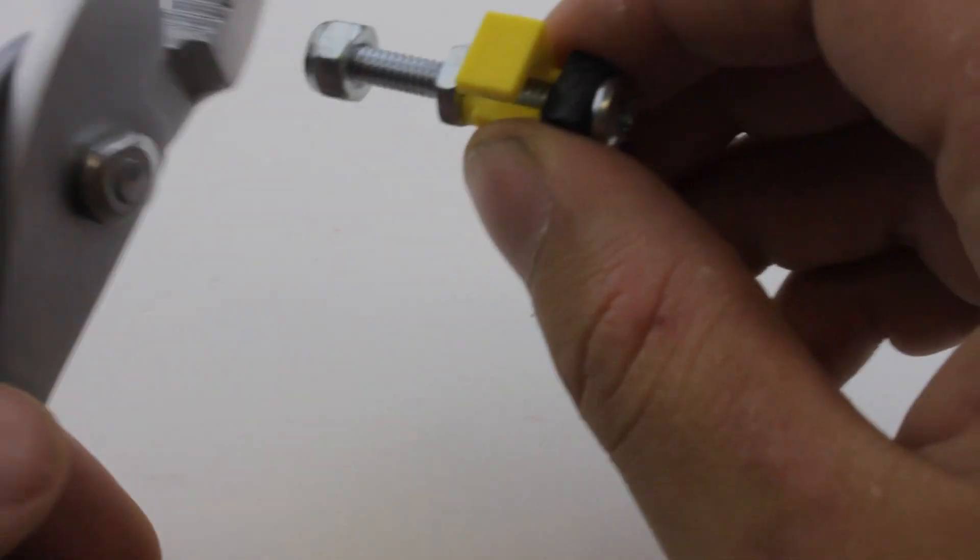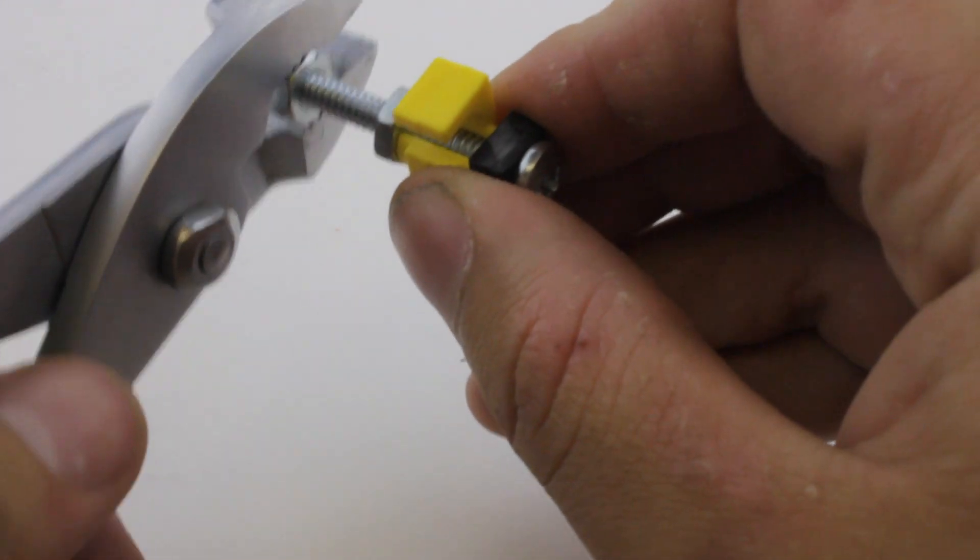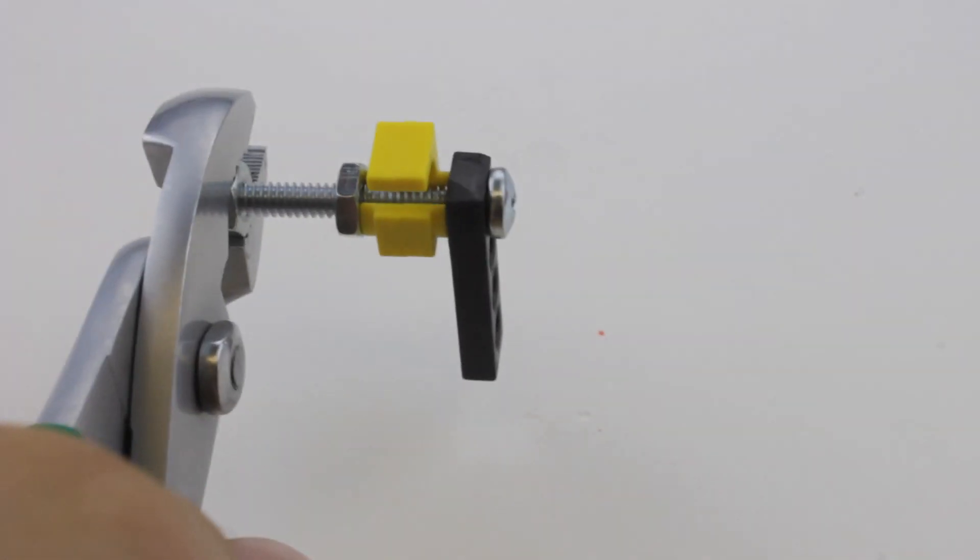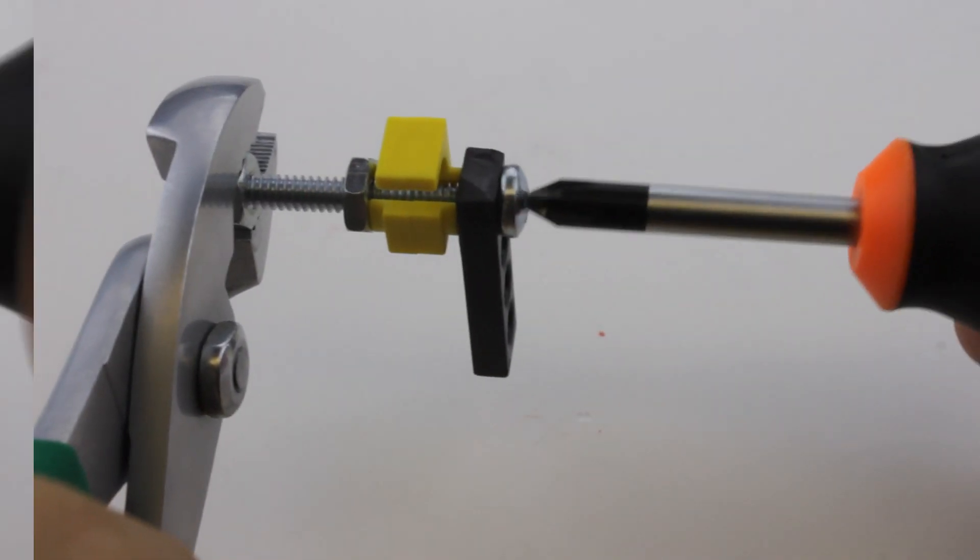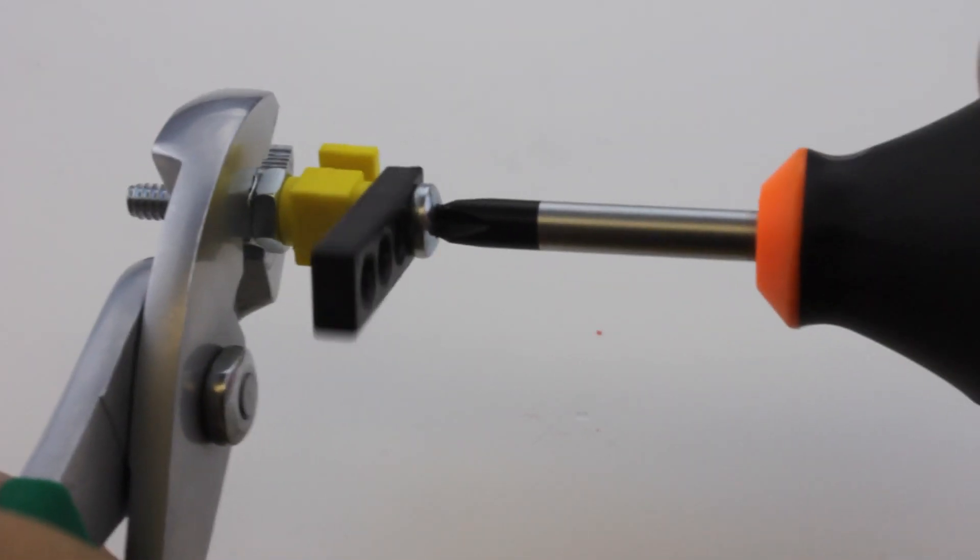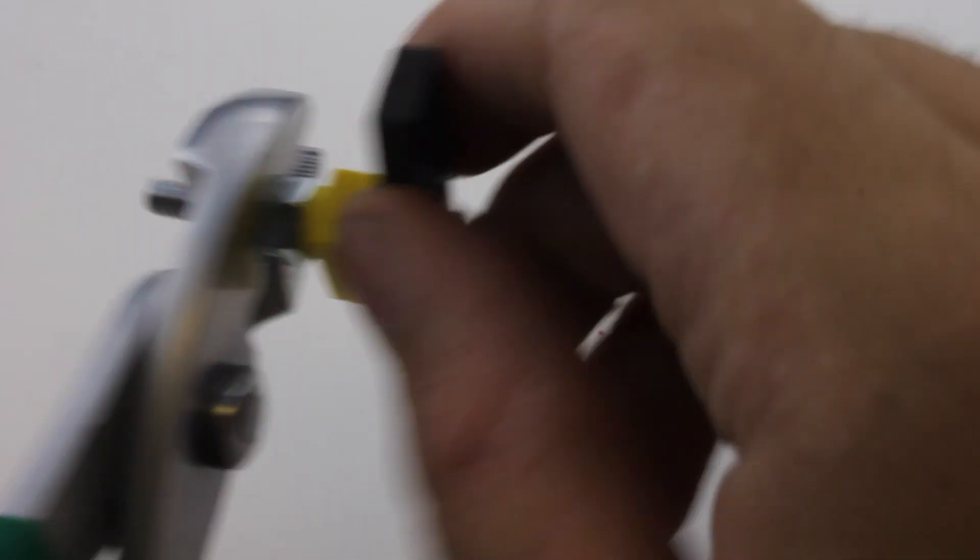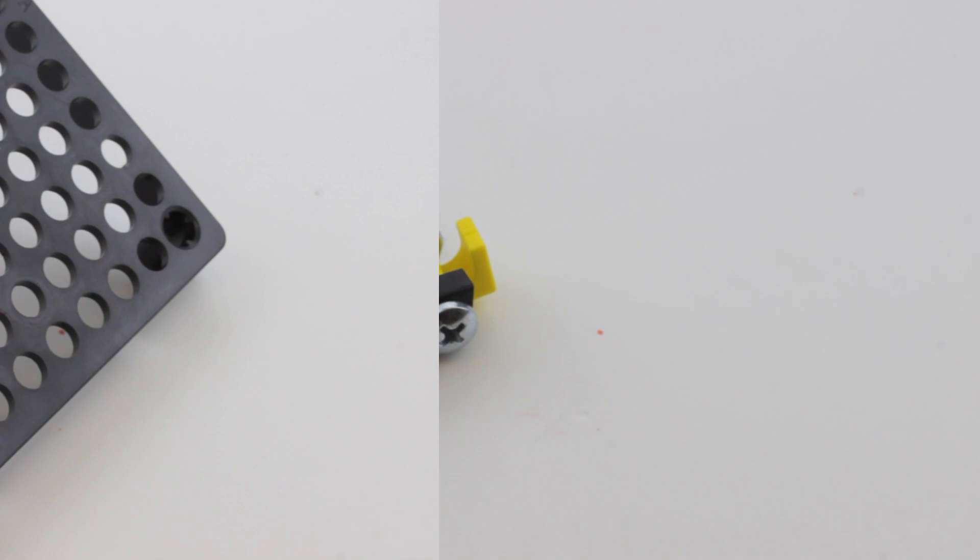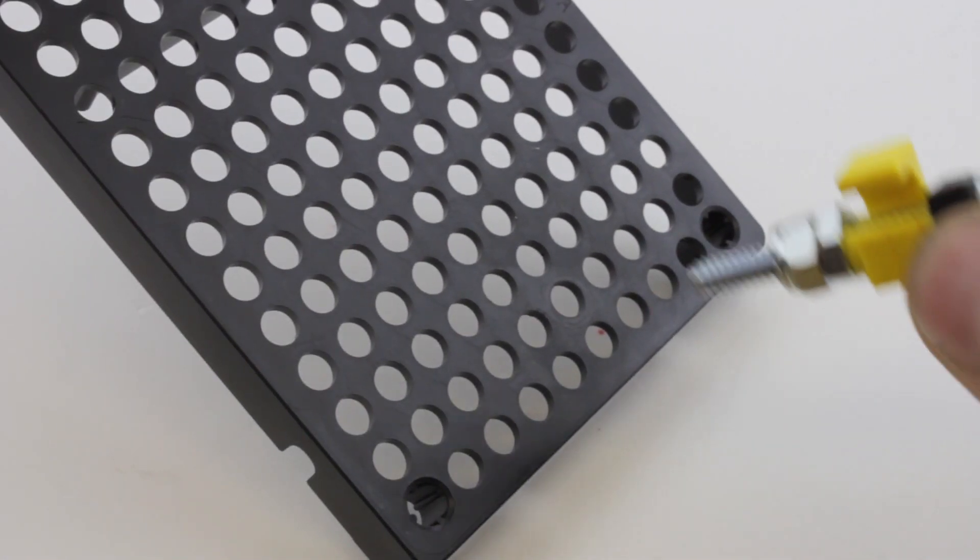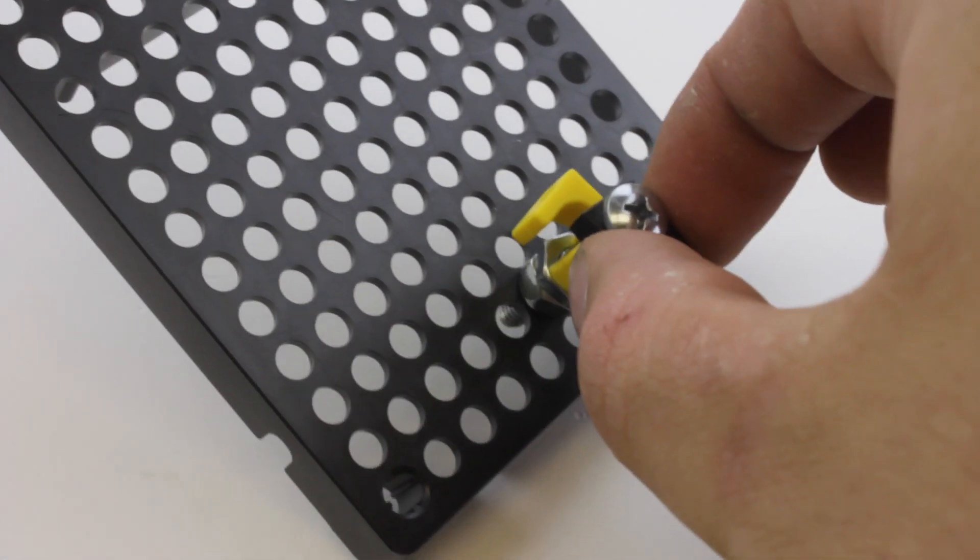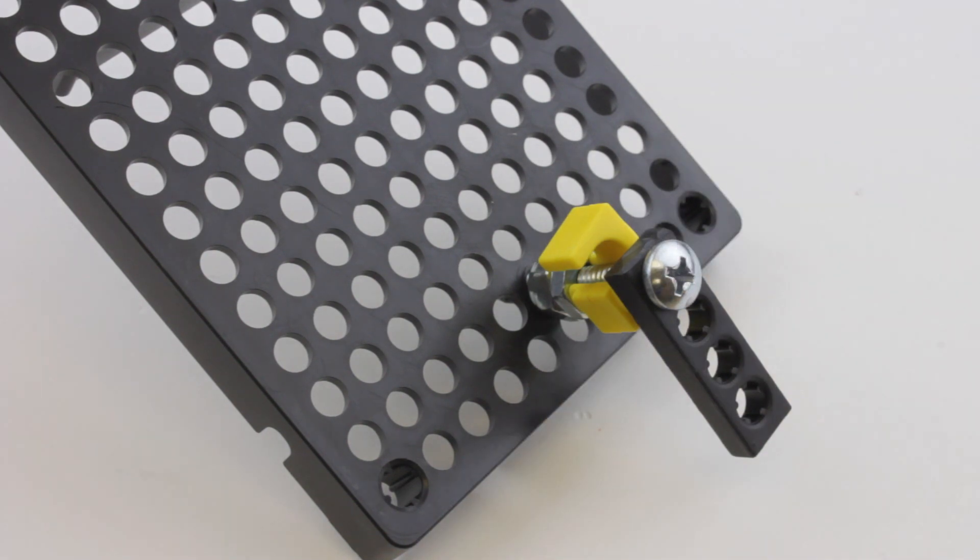Grab the locking nut with a pair of pliers and use the number 2 stubby screwdriver to tighten it down. Then take that and place the remaining screw through the bottom hole of your hole plate and add a locking nut onto the bottom of that.